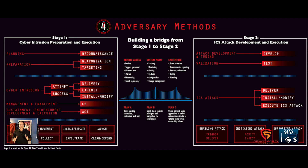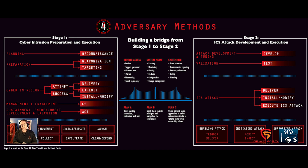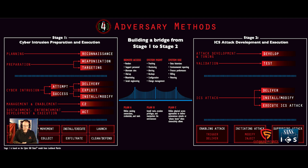One of the biggest things people don't really understand is that attacks against control networks are two-stage attacks. Stage one is going to be against our corporate network — attackers could get directly into our control network, but typically what we've seen when analyzing successful attacks is that stage one is against the corporate network.